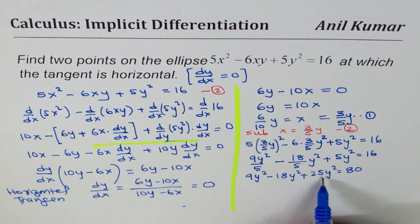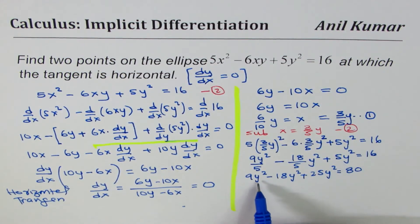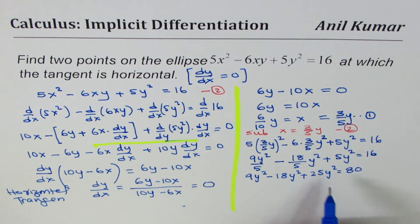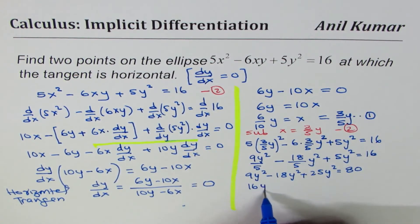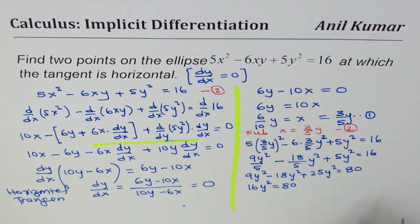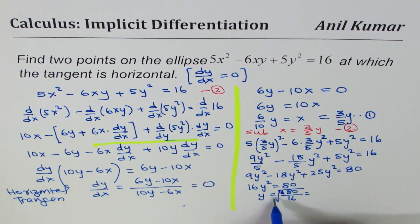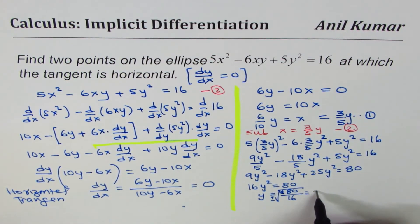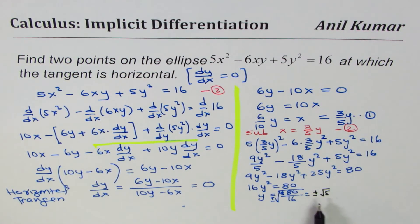Combining these terms, we get what? 9 minus 18 is minus 9, minus 9 plus 25 gets 16. So we get 16y² equals to 80, and that gives us y² equals to 80 divided by 16, square root. Which is plus minus square root of 5. So we get a value of y as plus minus square root of 5.